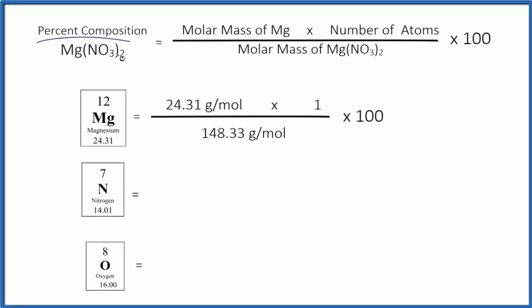Let's find the percent composition by mass for each element here in Mg(NO₃)₂, that's magnesium nitrate. So what we do to find the percent composition for an element within a compound here is we find the molar mass for the element, for magnesium, so that's 24.31 units or grams per mole.